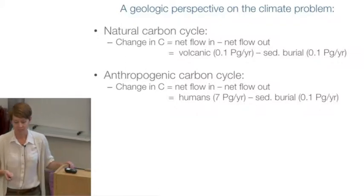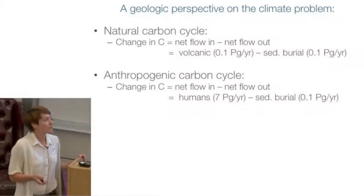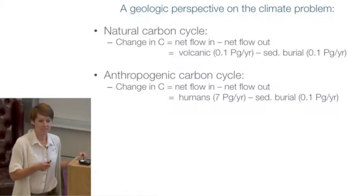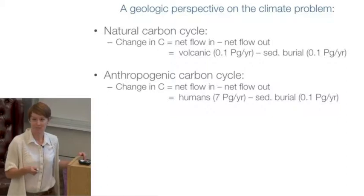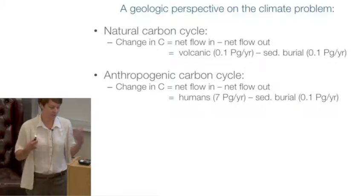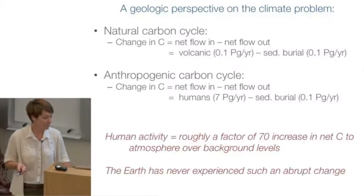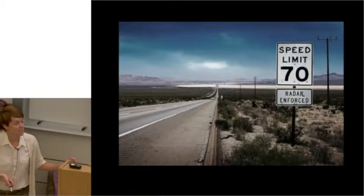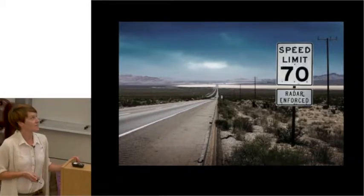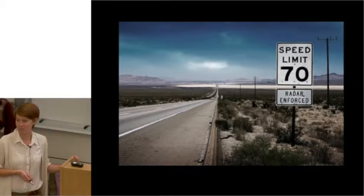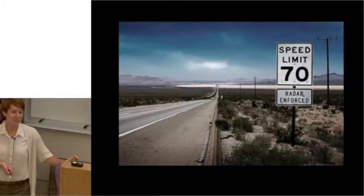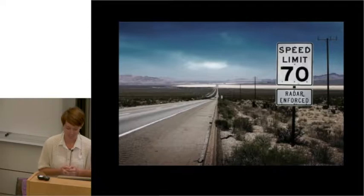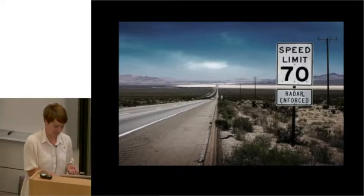This is roughly the equivalent of creating, in geologic terms, 70 new volcanic chains about the size of the Cascades all around the planet. The Earth has never experienced such an abrupt change. Another way to think of this is going 70 times the speed limit — that's 4,900 miles per hour, about Mach 6. Imagine the speeding ticket you would get. We've never even created a machine that can go 70 times the speed limit, at least on Earth.